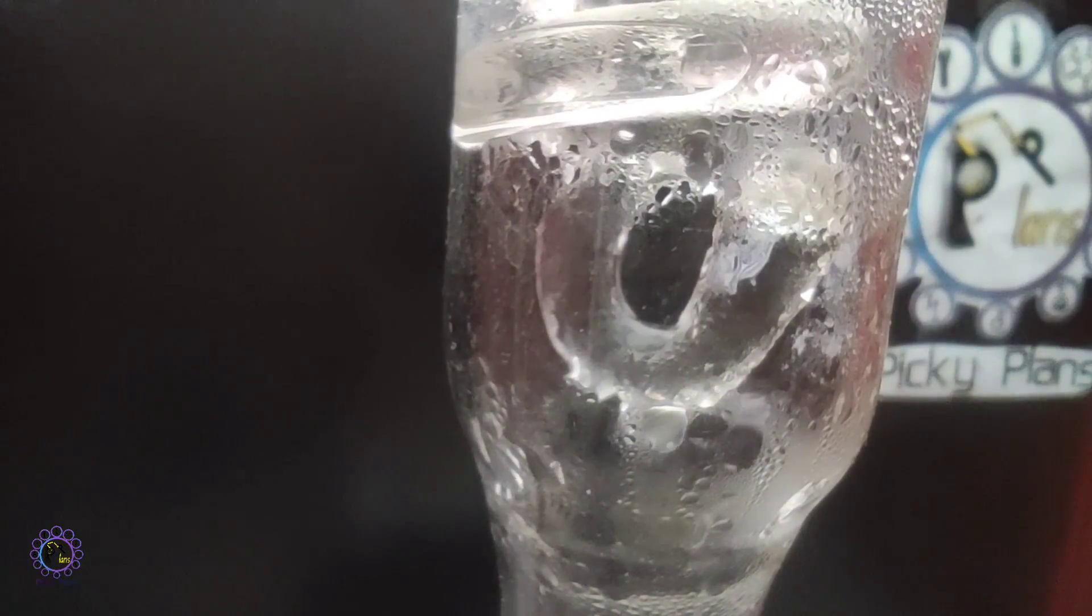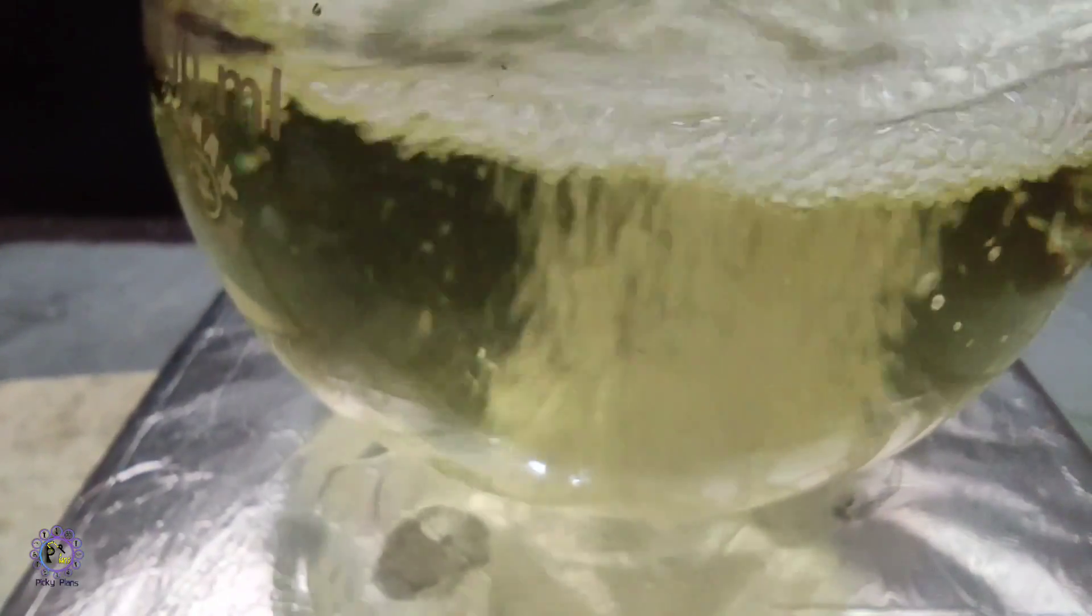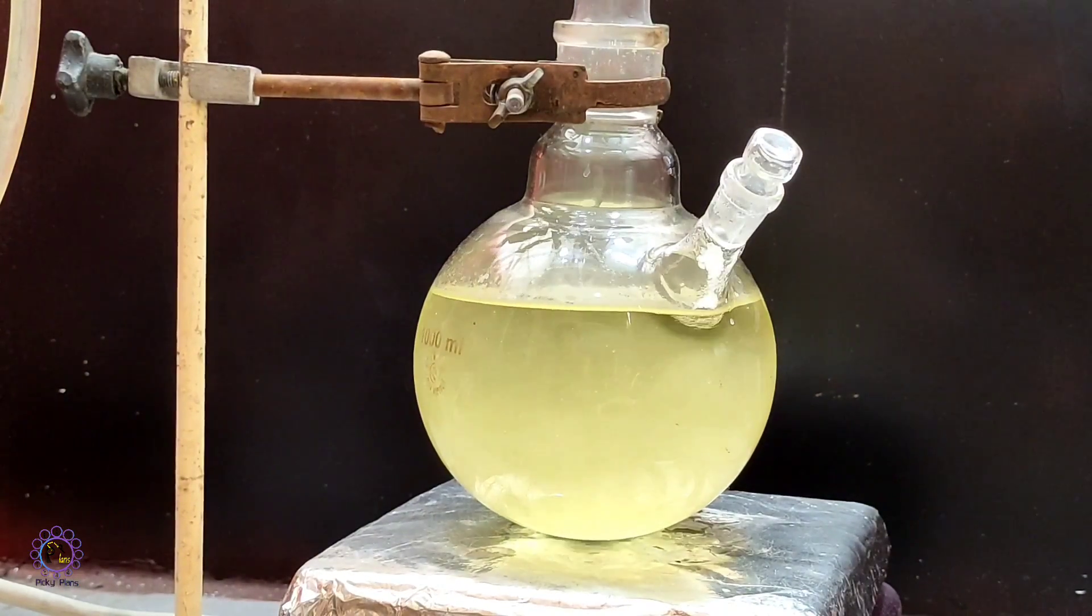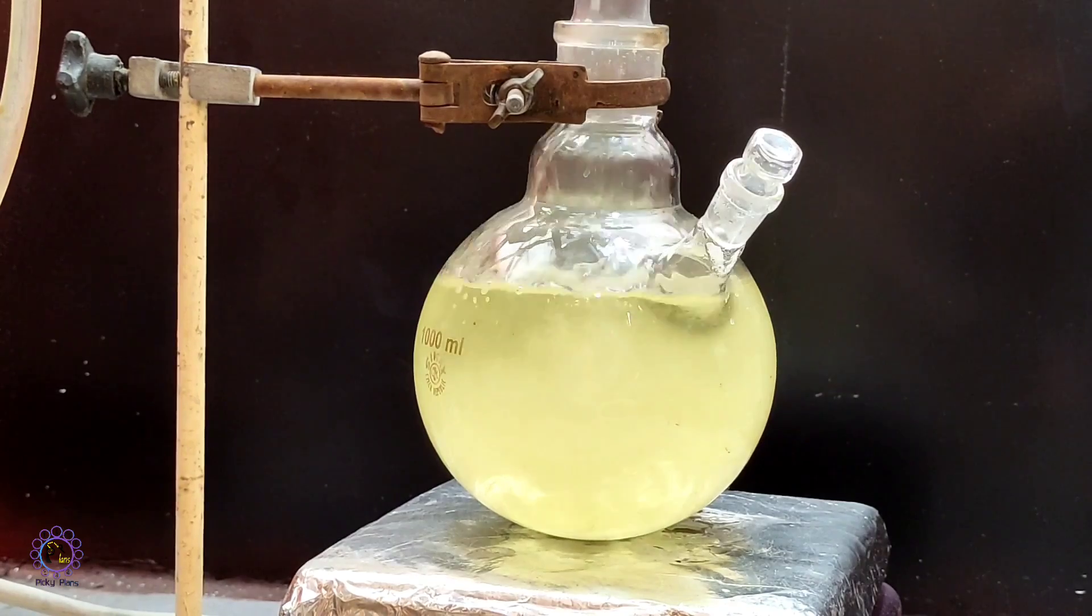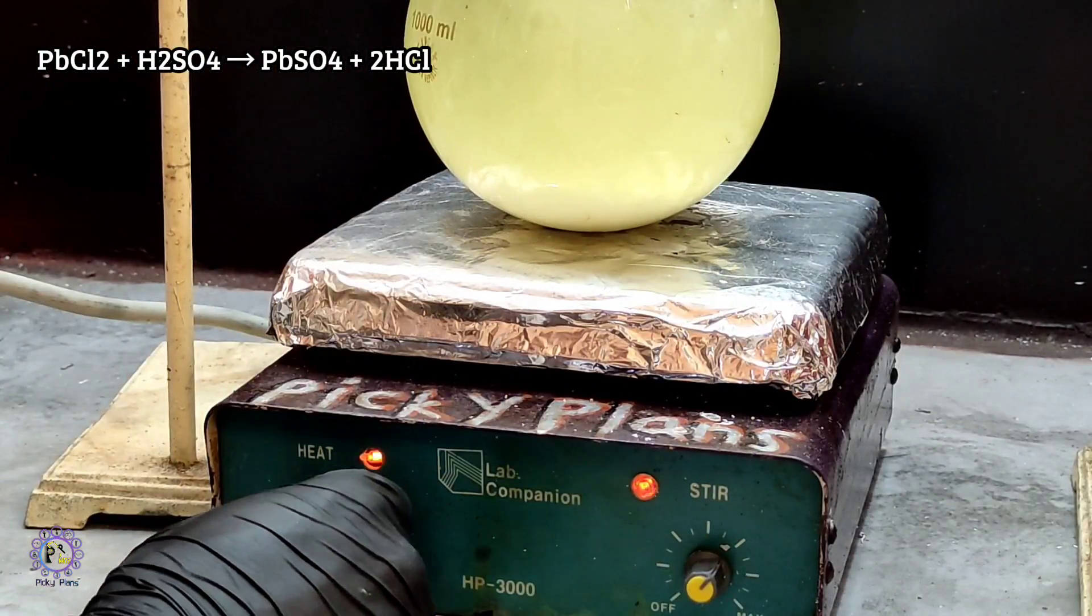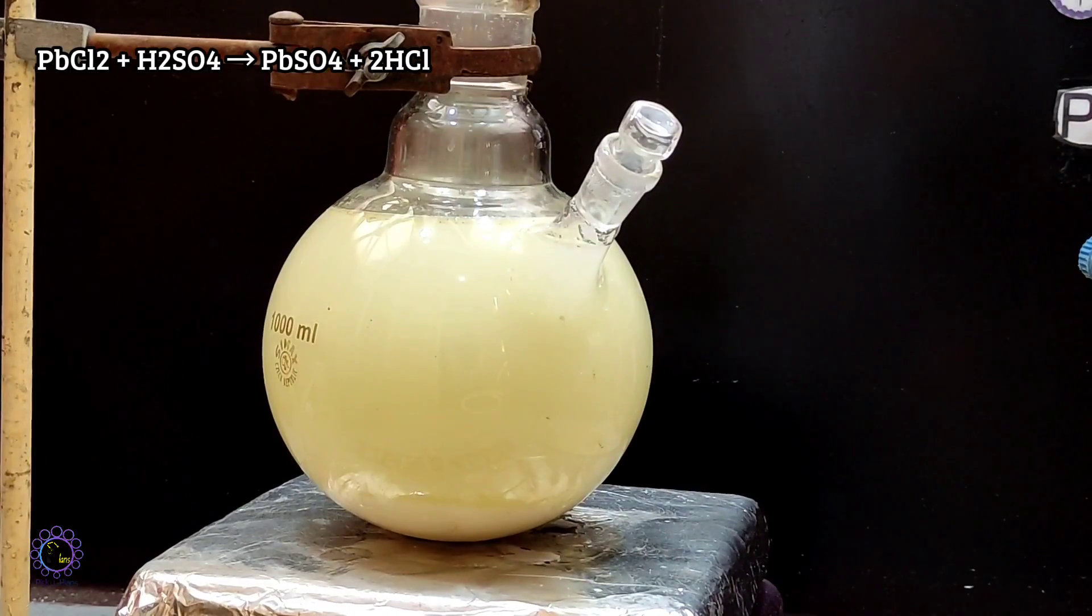That's due to the conversion of all stannous ion to stannic, since we have extra oxidizing agent in the solution which is nitric acid. When the solution of solder wire been completed and solution was still hot, I added some sulfuric acid in order to precipitate lead sulfate.